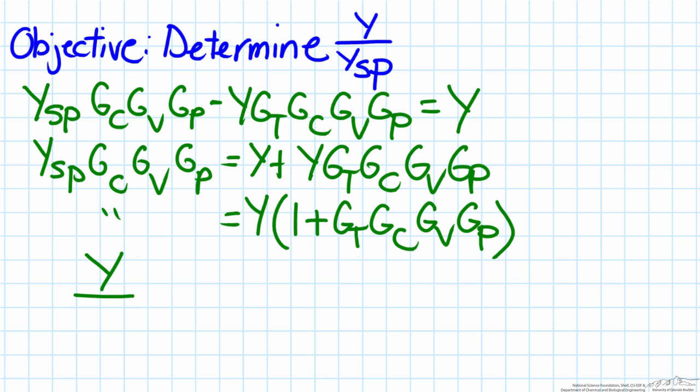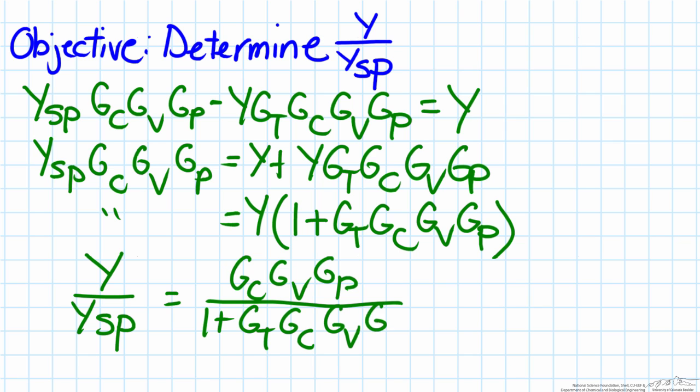So when that is done we end up with y over ysp, our final transfer function as Gc, Gv, Gp, divided by one plus Gt, Gc, Gv, Gp.